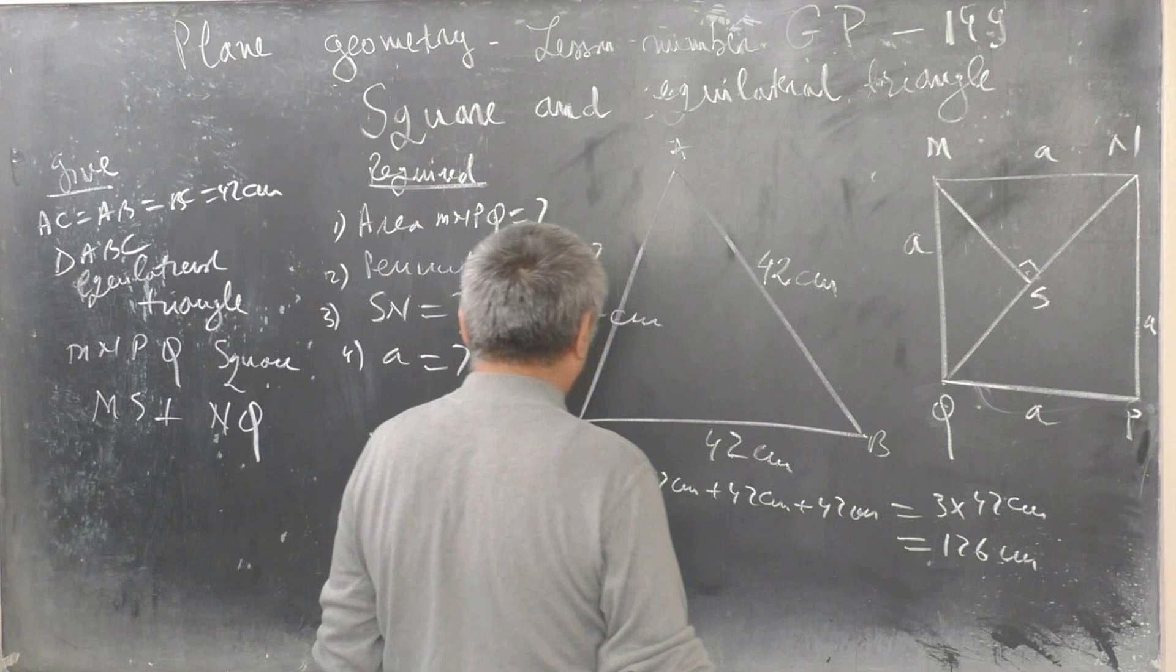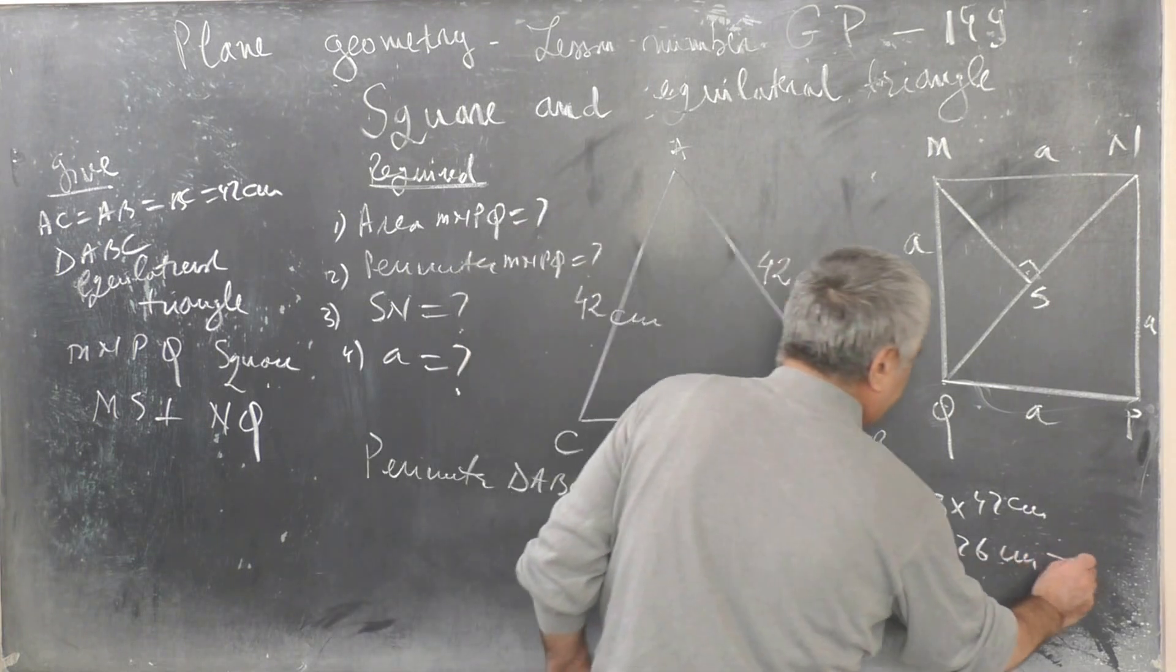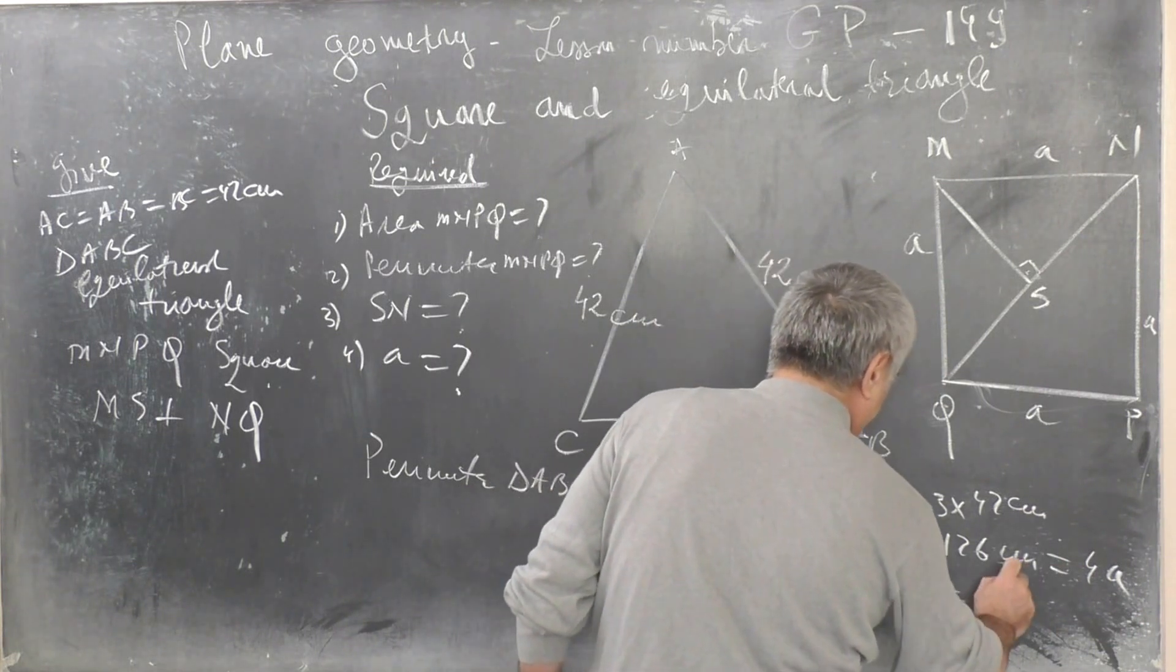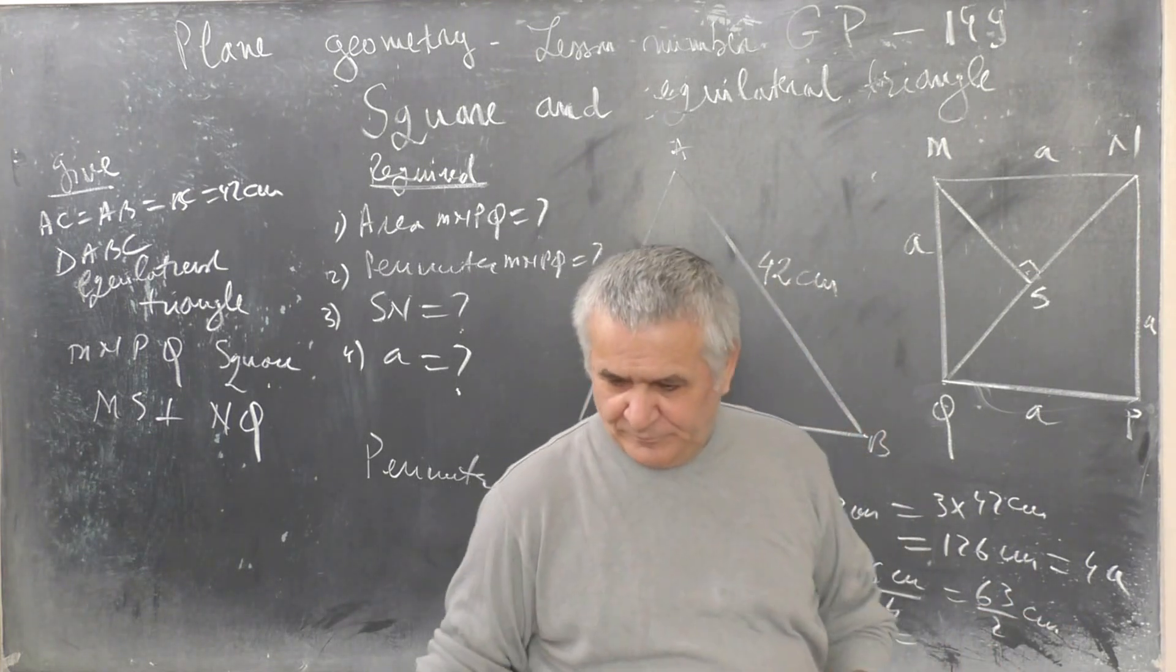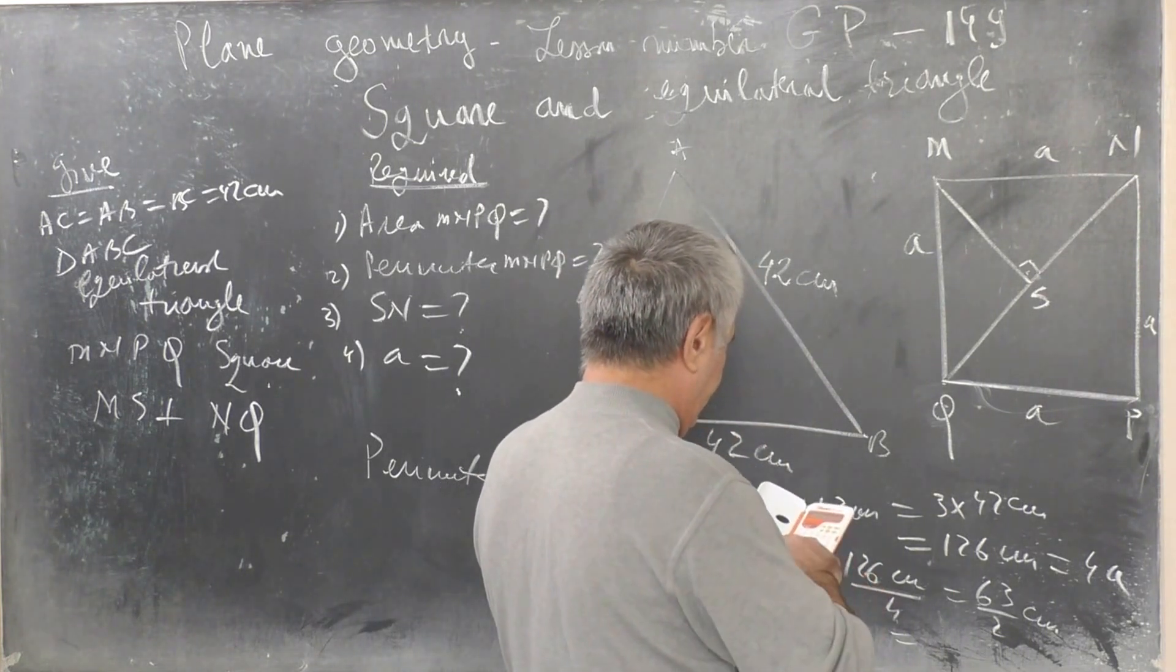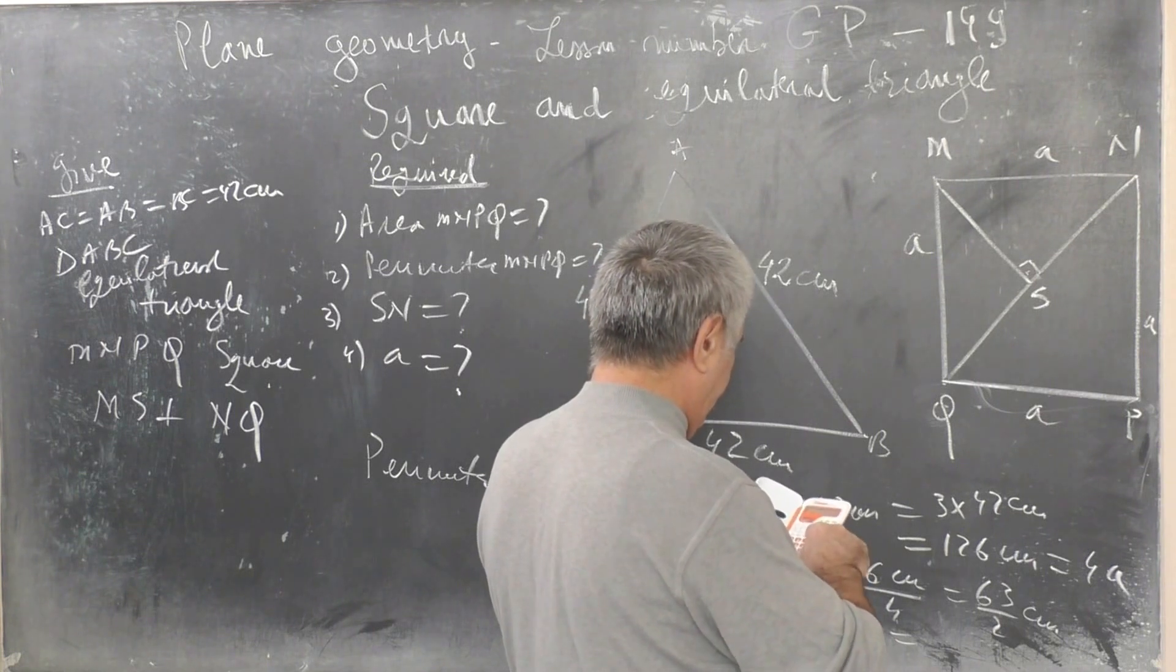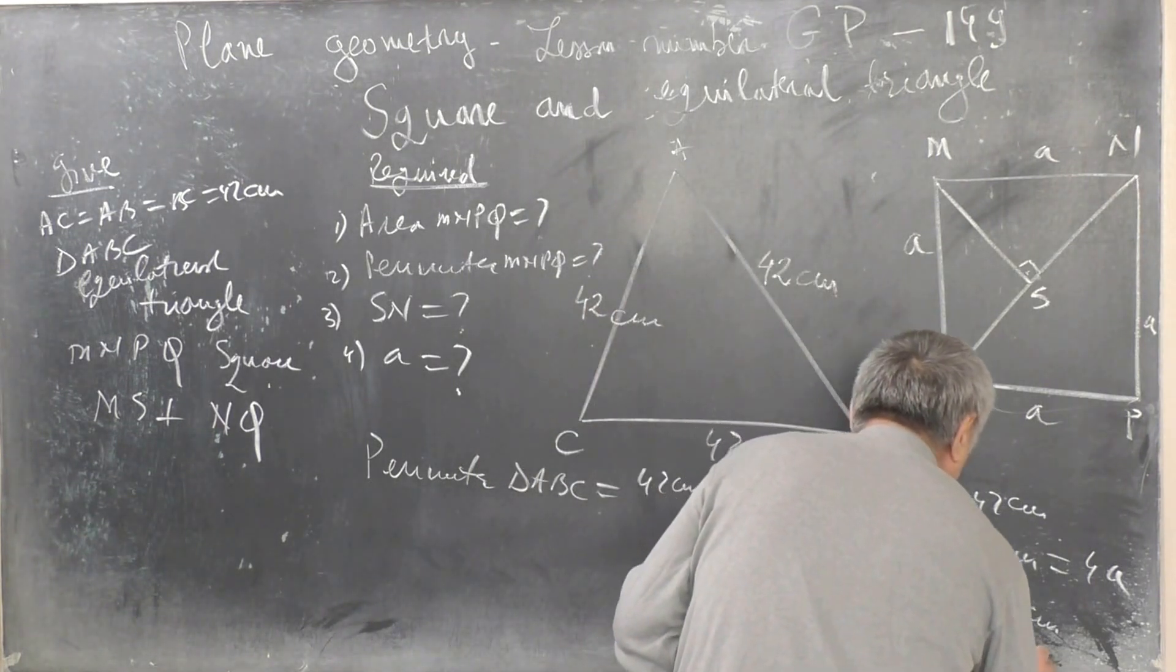Perimeter equals 4A. A equals 126 cm divided by 4, which equals 31.5 cm.